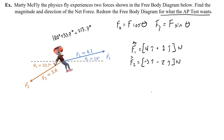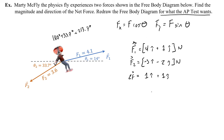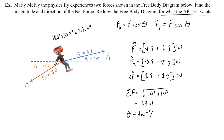Now I find the magnitude and direction of the net force using i and j. The sum of the x's: 4 plus negative 3 equals 1. The sum of the y's: 1 plus negative 2 equals negative 1. So the net force components are 1i minus 1j. The magnitude is the square root of 1 squared plus 1 squared, which is the square root of 2, or 1.4 newtons. The angle theta is the tangent inverse of negative 1 over 1, which is negative 45 degrees.